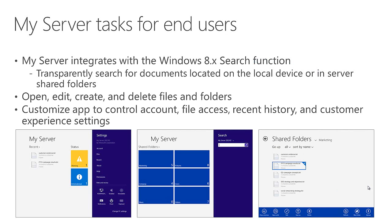Some of the things end users would typically do is access their files and folders. The app integrates with the Windows 8 search function so you can transparently search across all of your locations to find files whether they're stored locally on your device or on the Essentials Server. You can open, edit, create, and delete files in folders. You can also customize the application settings to control which account you're using to sign in, tweak your recent history, customer experience settings, and so on — just like you'd see in other Windows 8 apps.